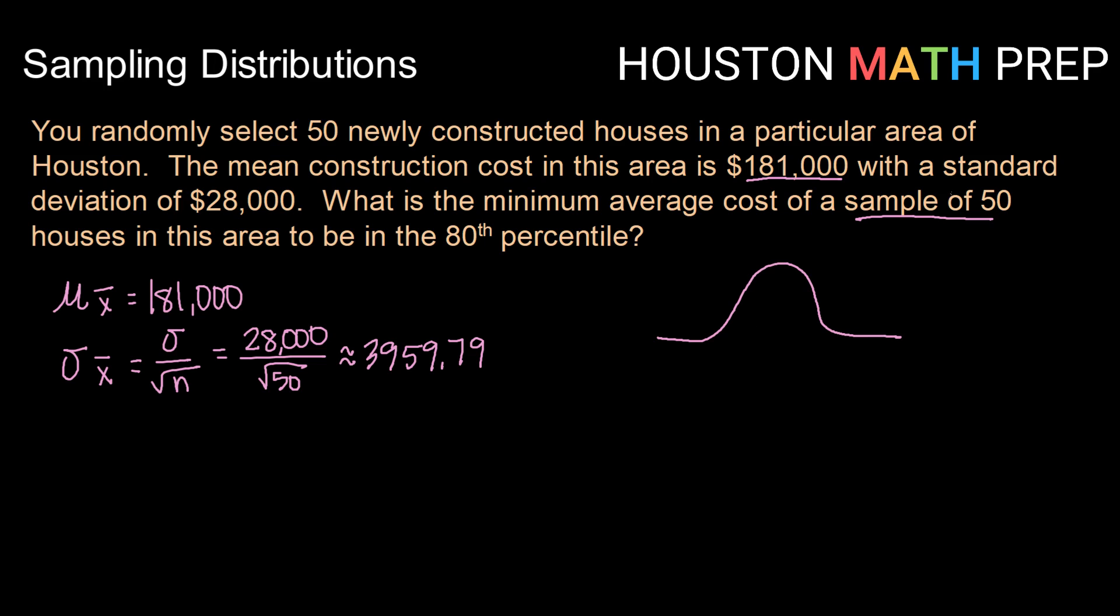So what's the minimum average cost to be in the 80th percentile? Because my sample is greater than 30, my central limit theorem says I'm going to be working with an approximately normal distribution centered around the same mean. So 80th percentile tells me that 80% are below my value. So if 50% are below my mean, then 80% might be somewhere over here. So I have 80% below my value that I'm interested in. Since I know the area and I'm looking for a value, I'm going to be using inverse norm.